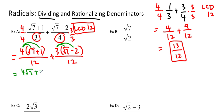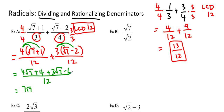So 4 root 7 plus 4 plus 3 root 7 minus 6, and we put them over the same denominator since it is the same denominator. Then we'll simplify: 4 plus 3 is 7 root 7, plus 4 minus 6 is negative 2, over 12. Now a common mistake is to divide the 2 and the 12. If you can't do it from all of the top — if there's no common factor — then we can't divide into the bottom. So remember, with two terms on top, you can't divide the bottom. Our solution is 7 root 7 minus 2 over 12.